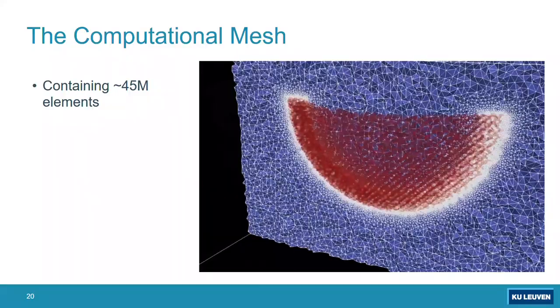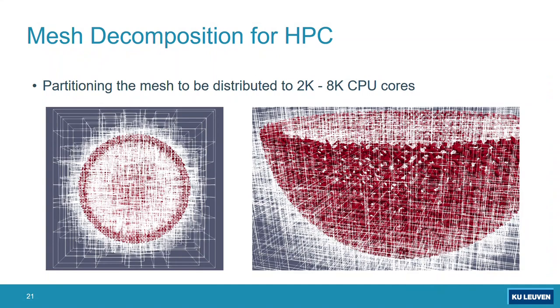Then in order to simulate it, we had different models that were simulated with 2000 to 8000 CPU cores. This is the way that the mesh is partitioned using mesh partitioning approaches to the available CPU cores. Because the mesh is mostly refined on the interface, you can see that the partitioning also has a lot of partitions on the interface of the scaffolds.